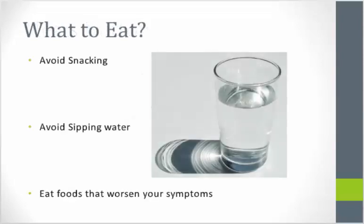During the test, instead of sipping on water little by little, drink the whole cup all at once. Avoid snacking in between meals and instead eat meals in one sitting. Sipping and snacking can affect the accuracy of the data we receive. Also, eat food that makes your symptoms worse during the test. This will help us to see what your acid levels are when you are experiencing symptoms.